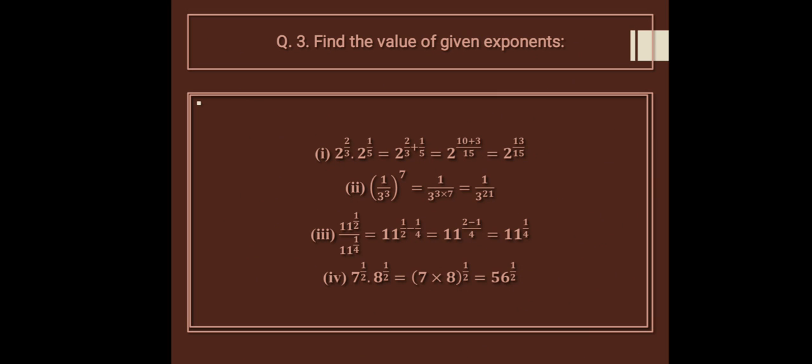1 upon 3 in a bracket, raised to the power 7. This power gets multiplied: 1 upon 3 into 7, so it is 1 upon 3 raised to the power 21.